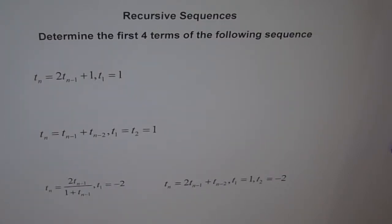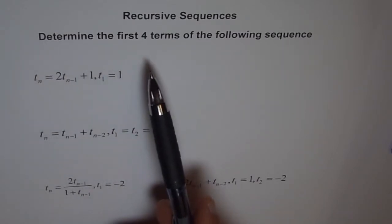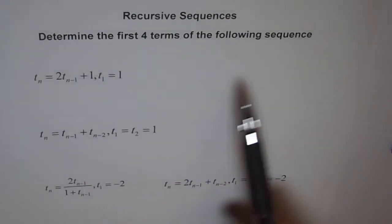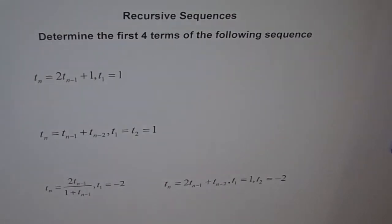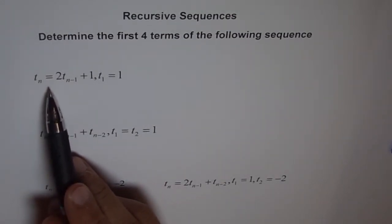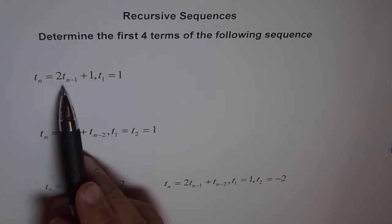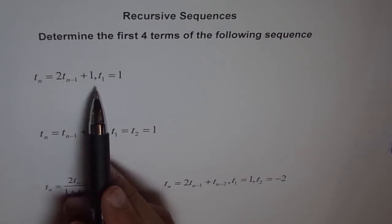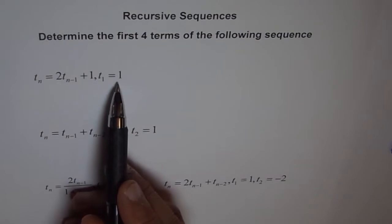Now, here in the given question, we will try to determine the first four terms of the sequences given. As you see the sequences, Tn is equal to 2 times Tn-1 plus 1, where T1 is equal to 1.